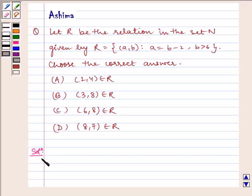Now let us write the solution. We have two conditions given to us: R = {(a,b): a = b-2, b > 6}. Here two conditions are given to us: a = b-2 and b > 6.